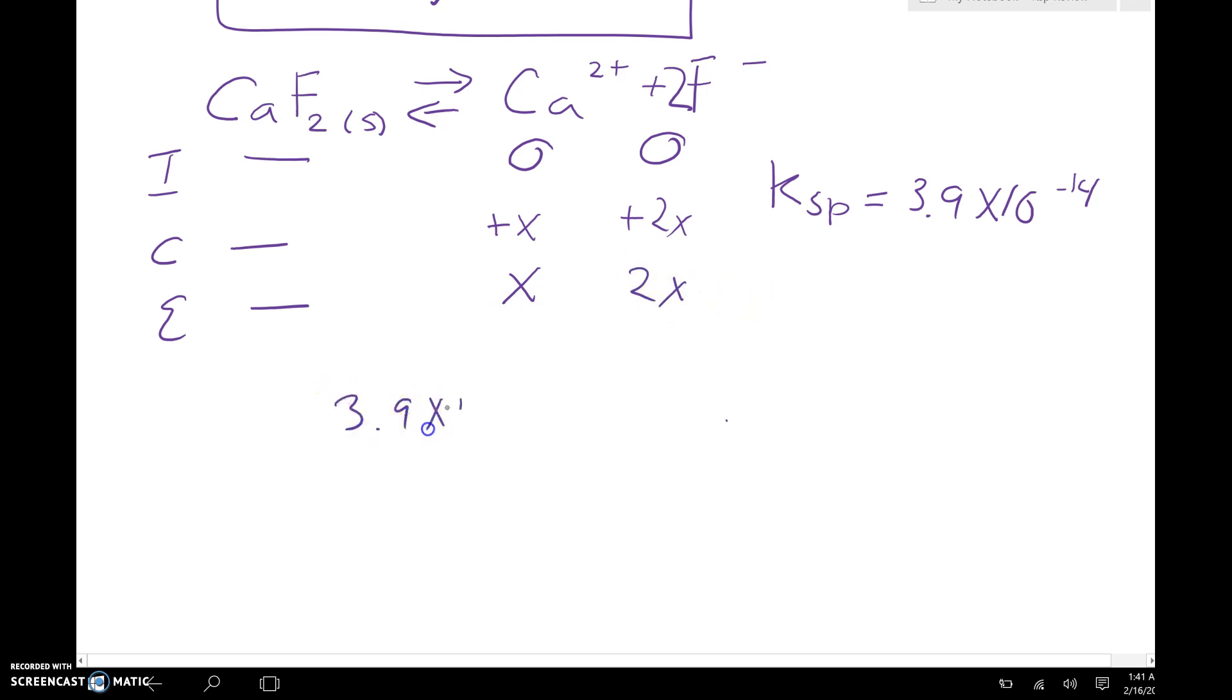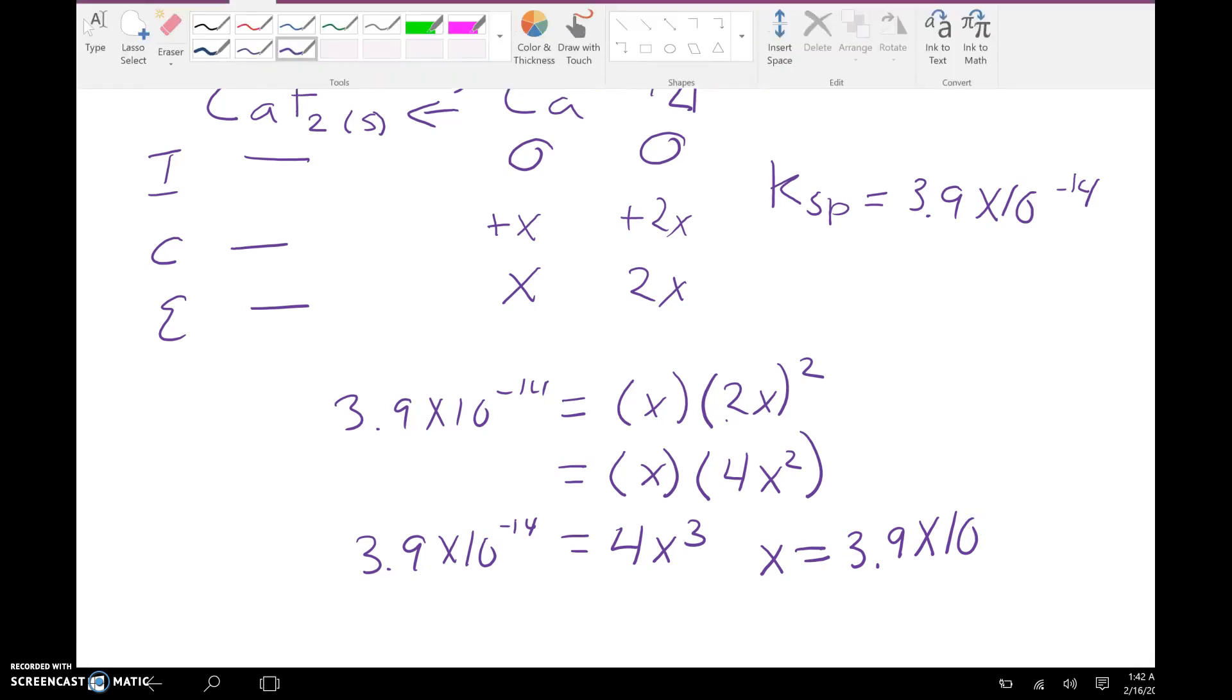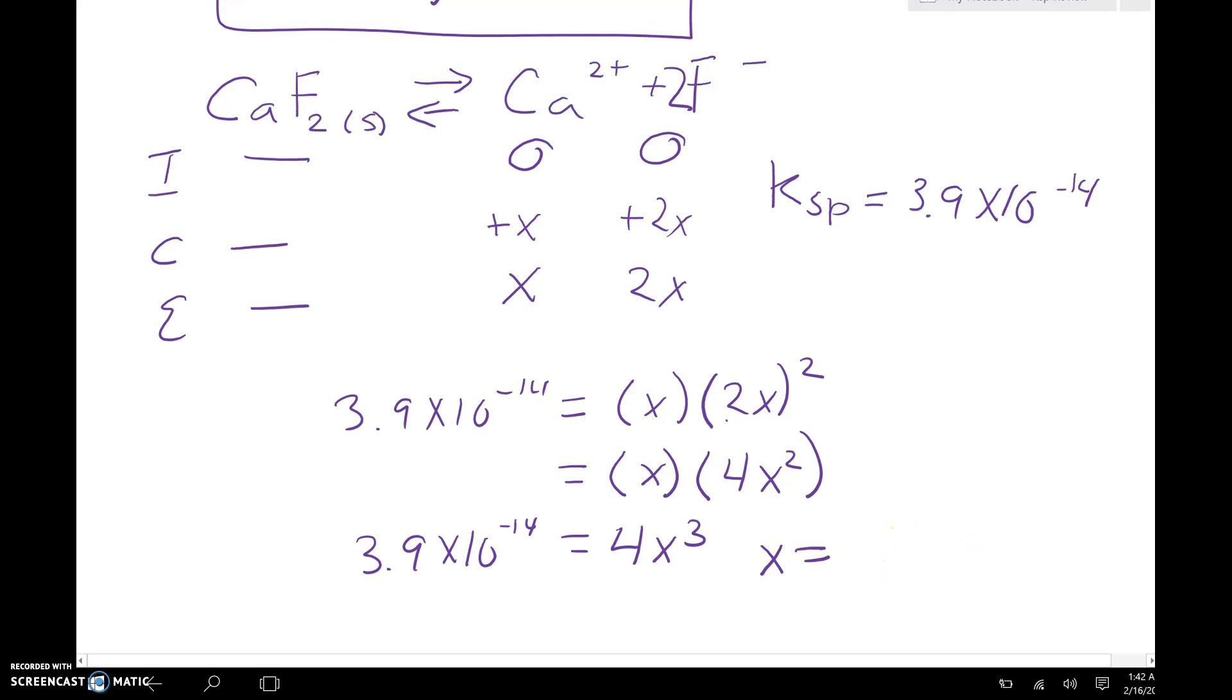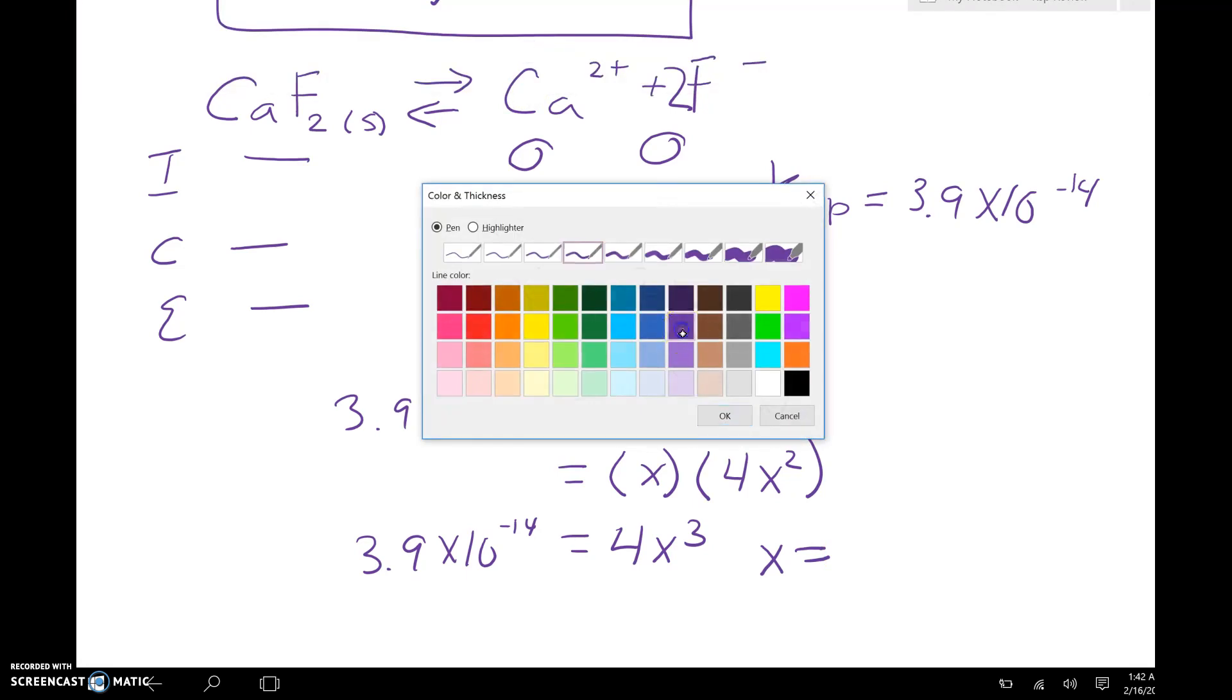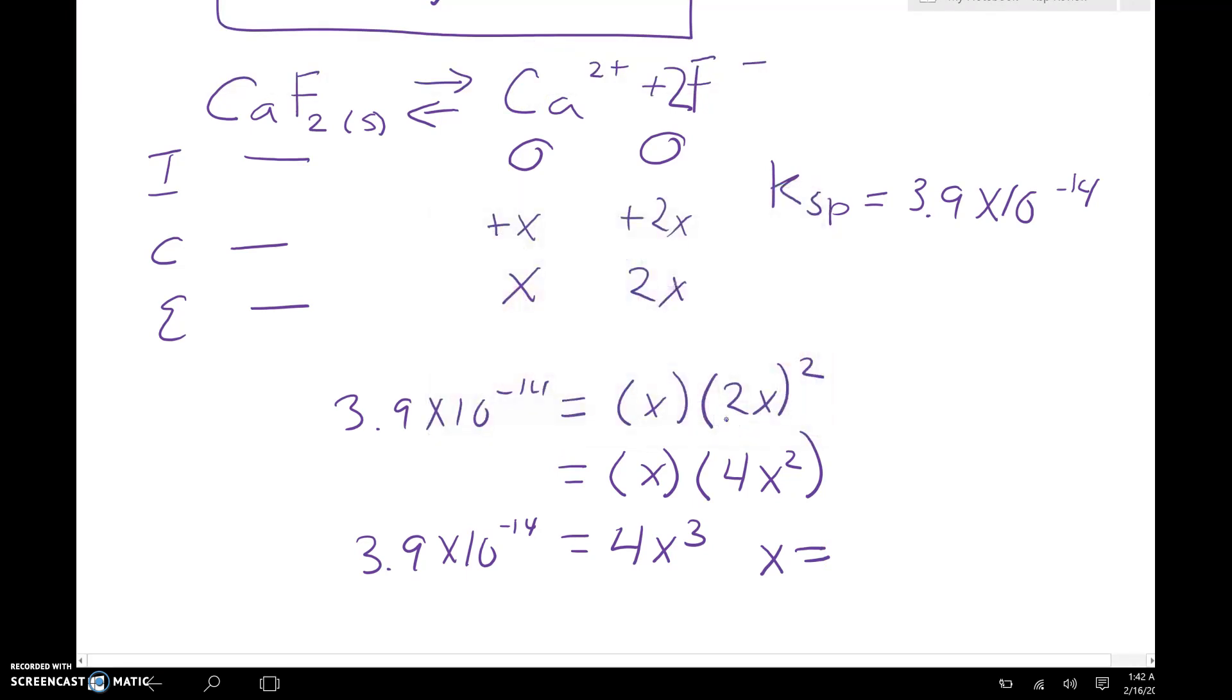Now I'm going to say 3.9 times 10 to the negative 14th, that's my provided Ksp, equals X times 2X squared. Be cautious with your algebra here. A lot of students mess that up. Remember that 2X squared becomes 4X squared, which means this whole thing ends up being 4X cubed equals 3.9 times 10 to the negative 14th. Go ahead and solve for X, and when I do that I get 2.1 times 10 to the negative 4.